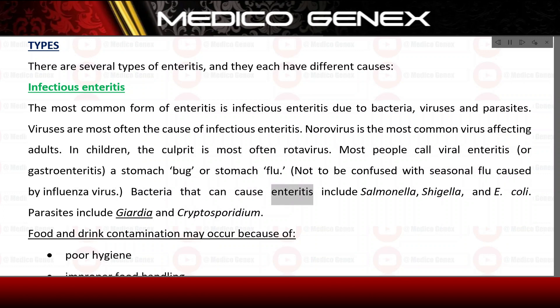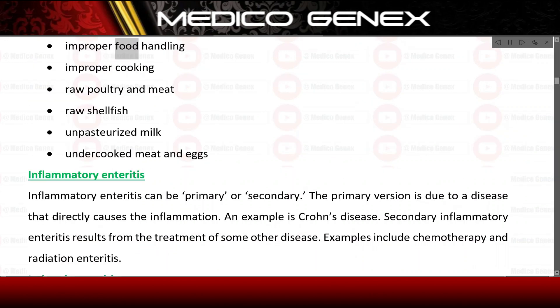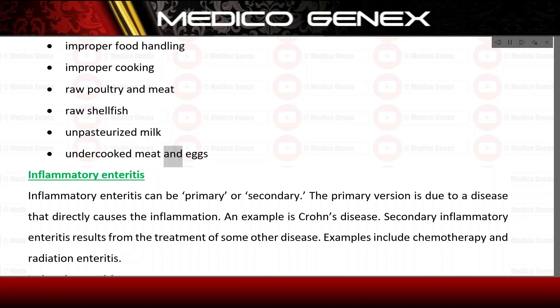Bacteria that can cause enteritis include Salmonella, Shigella, and E. coli. Parasites include Giardia and Cryptosporidium. Food and drink contamination may occur because of poor hygiene, improper food handling, improper cooking, raw poultry and meat, raw shellfish, unpasteurized milk, and undercooked meat and eggs.